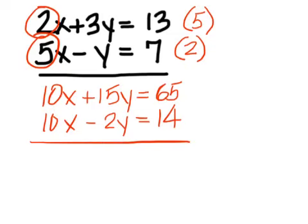Now look at your 10x's. What you want to do is get rid of them. And if I add both equations together, what will I get in the x position? 10x plus 10x. 20x, so they'll still be there. What if I do 10x minus 10x? Zero. That's what we want. We want them gone.